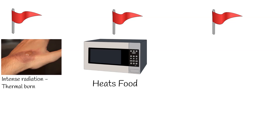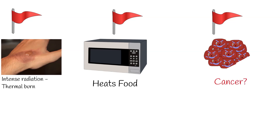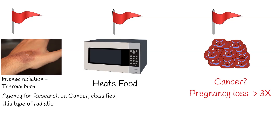Non-ionizing EMR can still heat substances. For instance, microwave ovens use non-ionizing EMR to heat food, so theoretically it can affect humans as well, especially if we use devices for hours, near us, and frequently. Researchers have found that the chance of pregnancy loss is almost three times more likely after experiencing exposure to high levels of non-ionizing EMR.